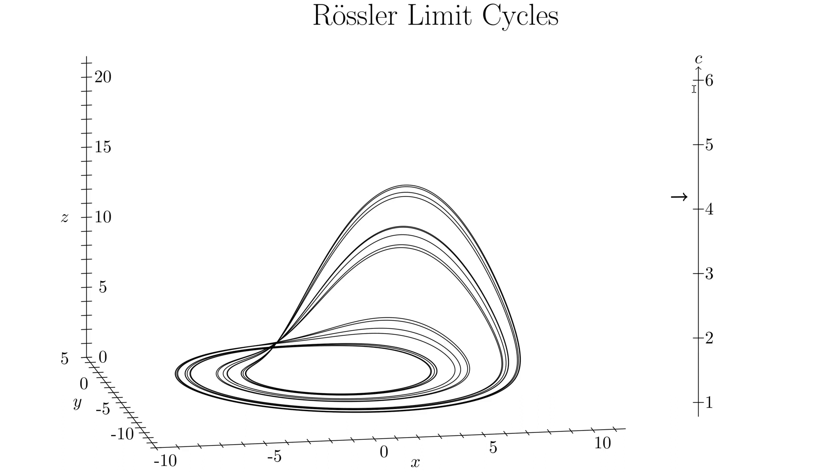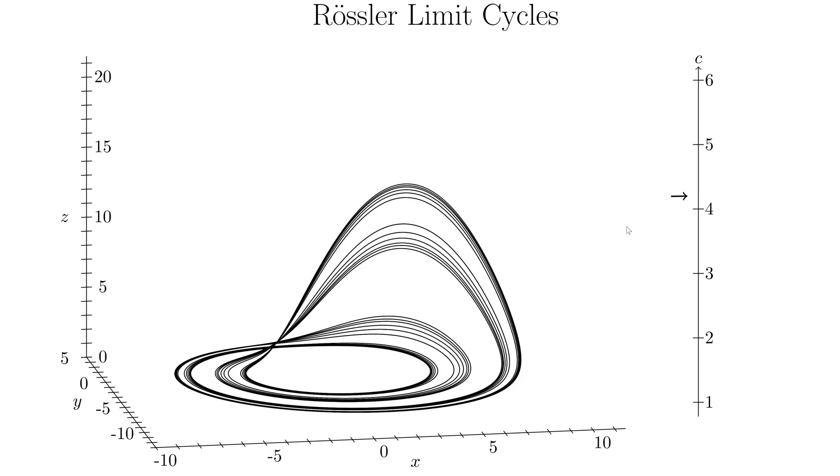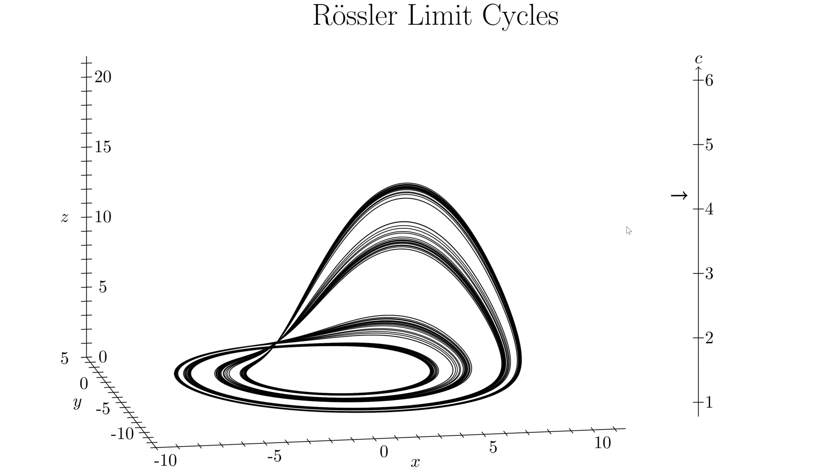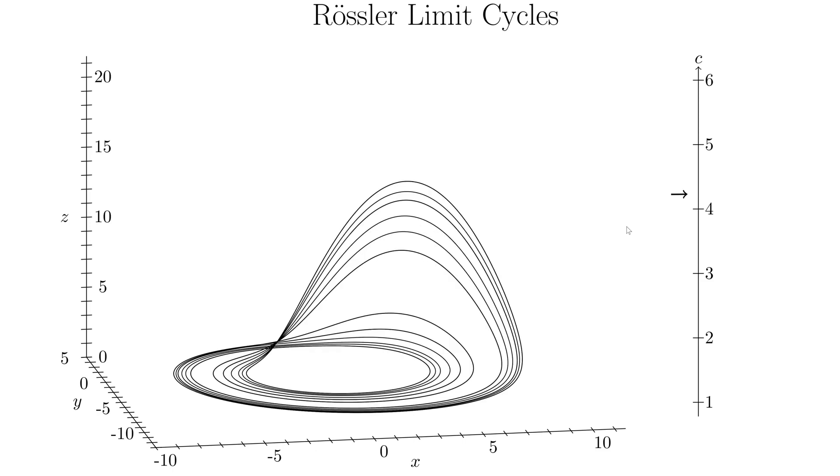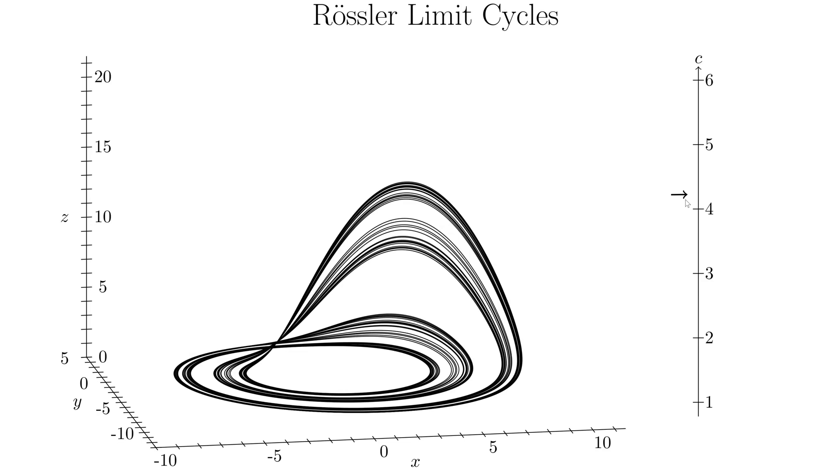But notice we aren't at the 5.7 yet. So there are other cases of chaos in between. And here we go. So it's starting to split a lot now. And all of a sudden it just kind of simplified. So very small changes in parameters can actually have very big changes in how this forms.